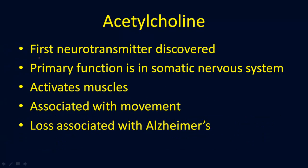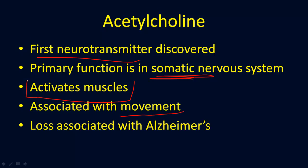Acetylcholine was the first neurotransmitter discovered. It's connected primarily to the somatic nervous system because it's associated with muscle movement — acetylcholine activates the muscles in the body. Interestingly, the loss of acetylcholine is also associated with Alzheimer's disease.